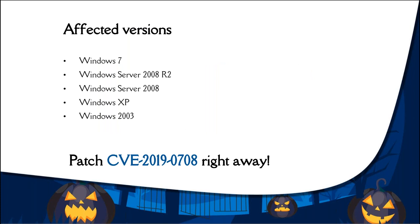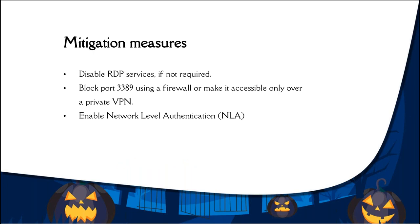We highly recommend you patch CVE-2019-0708 across all affected operating systems to stay secure against BlueKeep. If fixing the vulnerability isn't possible anytime soon, ensure the following mitigation controls are in place: RDP services must be disabled if not used for business-critical operations. Also ensure port 3389 is blocked using a firewall or accessible only over a private VPN. Enable Network Level Authentication — note this is only a partial mitigation to prevent unauthorized, unauthenticated attackers from exploiting this flaw.